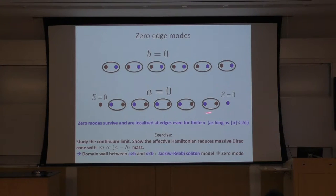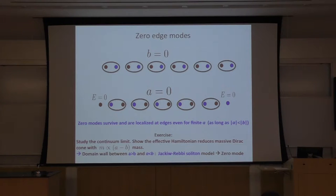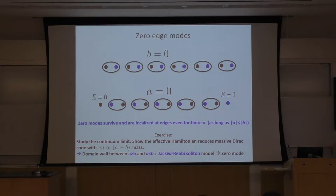But this feature is robust — if we change A a little bit, this zero mode doesn't go away. For this extreme case, the wave function is a delta function. It's only at the endpoint for the zero mode. But when A is non-zero, the wave function is not a delta function, but it's still localized. Most of the weight is around these two edges of the system. As an exercise, I want you to study the low-energy limit of this problem — go to the continuum limit — and show that the system is described by two massive Dirac cones.